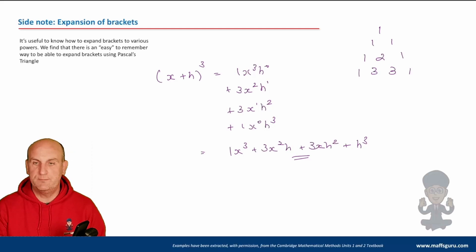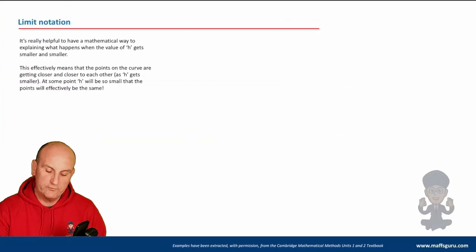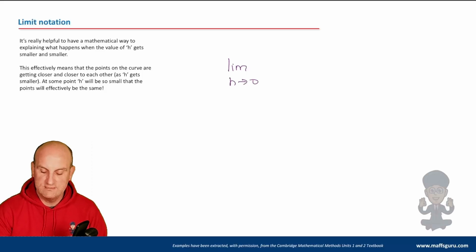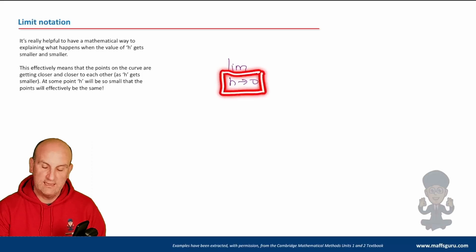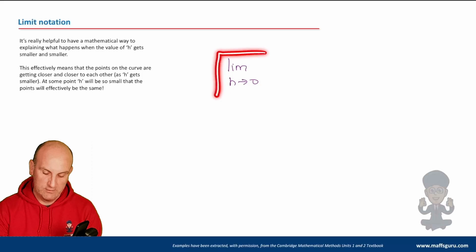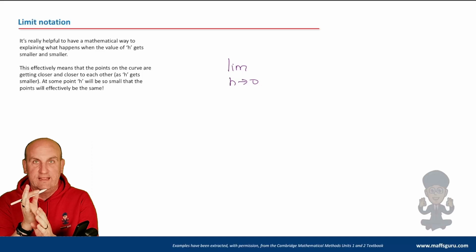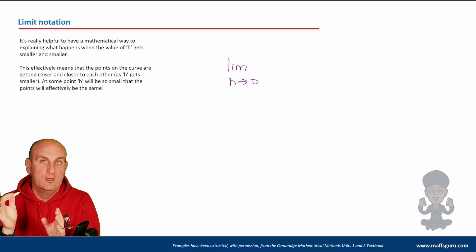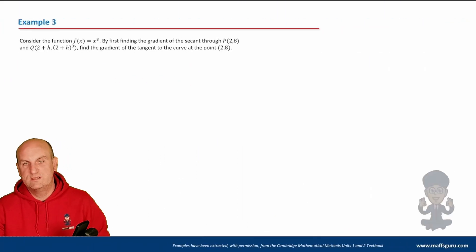Expansion of brackets becomes important, and now the last key concept: limit notation. We introduce the notation lim as H → 0. What we're saying is: consider what happens to an equation when H gets closer and closer to zero — that's what it means to make the distance between two X values smaller and smaller.